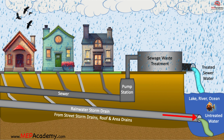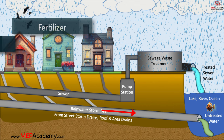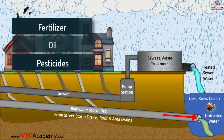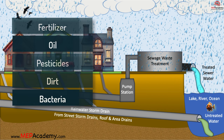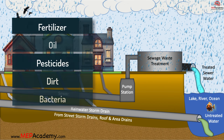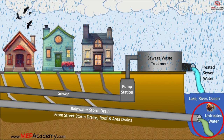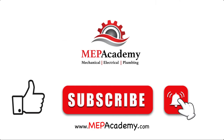According to the EPA, rainwater runoff picks up fertilizer, oil, pesticides, dirt, bacteria, and other pollutants as it makes its way through storm drains and ditches untreated to our streams, rivers, lakes, and the ocean. Polluted runoff is one of the greatest threats to clean water in the U.S. That's why it's important not to dump anything in the storm drain that you wouldn't want to be swimming in or drinking. In essence, this is the fundamental process of how your plumbing system operates. If you liked this video, please give it a thumbs up and subscribe to our channel.